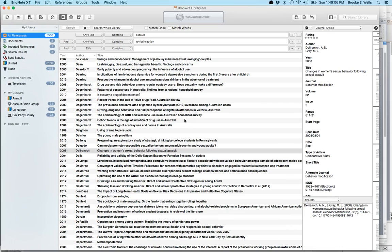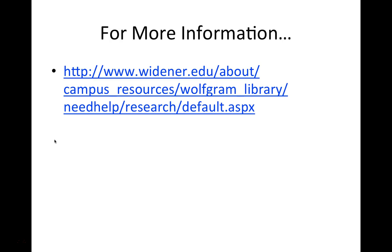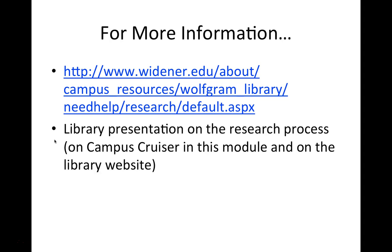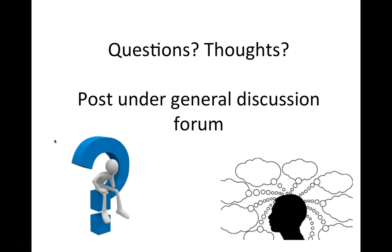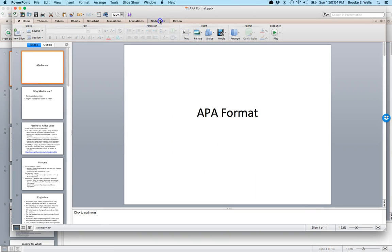For more information about literature reviews, I'll post a couple of PowerPoints from the Widener library webpage on the research process and using literature — those will be in Campus Cruiser in this module but are also on the library website. I'll end here on literature reviews. For those of you who feel you have a really good foundation in APA format, you don't have to watch this next part — I'll run through a fairly quick presentation about APA format and that will be it for this module.